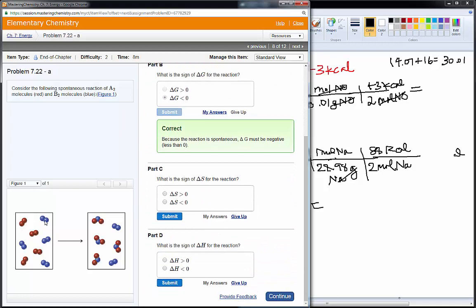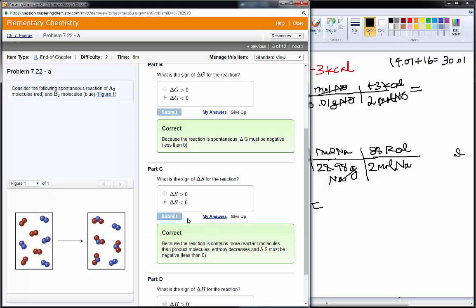What is the sign for delta S? Hopefully, you can see I'm going from more molecules to fewer molecules. So, that looks like I'm creating more order. So, that would be a negative delta S.